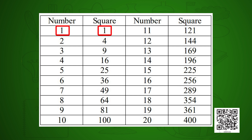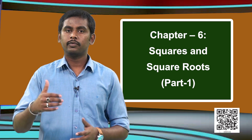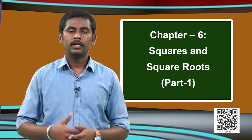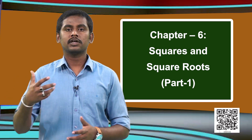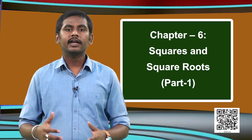Look at number 1 — its square is 1. Number 2 squared is 4. Number 3 squared is 9. Number 4 squared is 16. Number 5 squared is 25. We can also proceed after 20 — take 21, multiply 21 with 21 and check its product. Like this we can get all the squares of the given numbers.